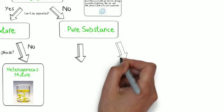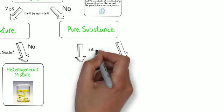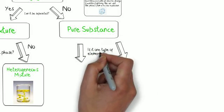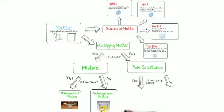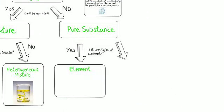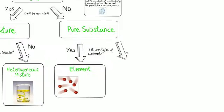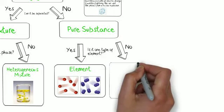Now, going back to the pure substance, we can ask ourselves, is it one type of atom? Or element? And if it's one type of element, then what we have are elements. Elements meaning that it's made up of just one thing. Now, elements can exist as single atoms, or they can exist as multiple atoms, as long as they're the same things. H2 is an element, hydrogen.